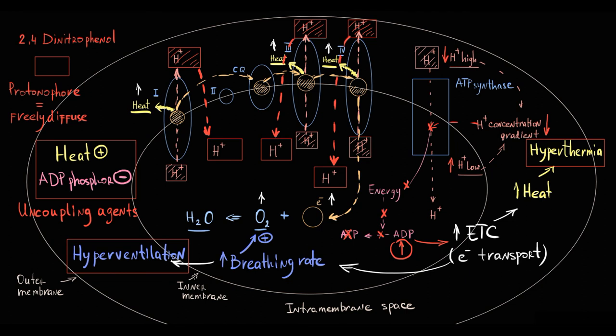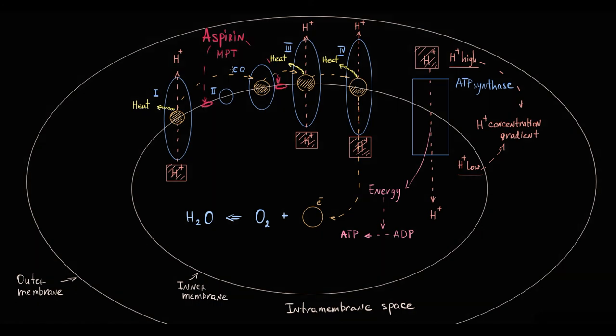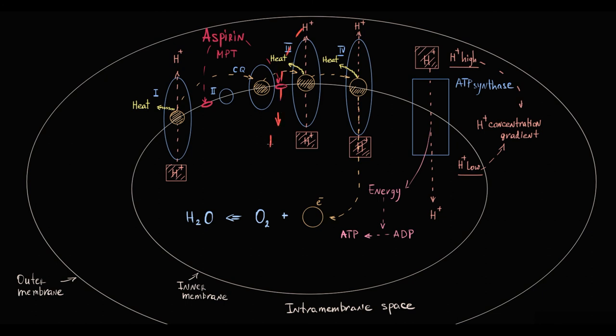The only difference is how hydrogen proton gradient is dissipated. For example, aspirin induces mitochondrial permeability transition, that increases permeability of the inner mitochondrial membrane for hydrogen protons. And from this point, pathogenesis is exactly the same.